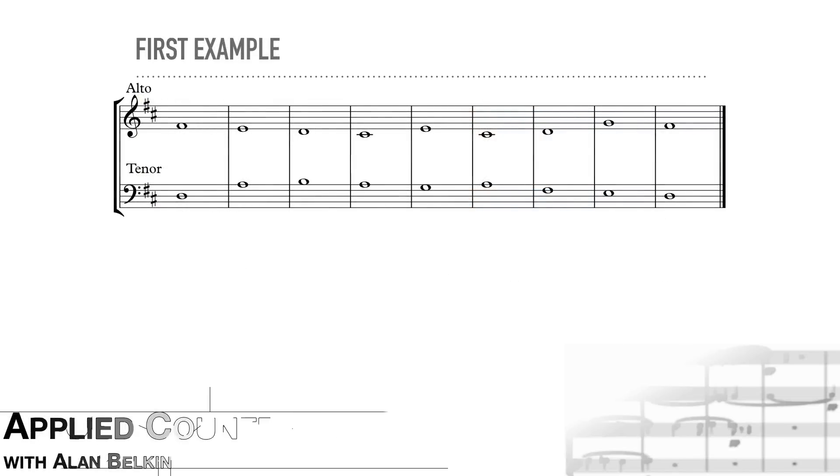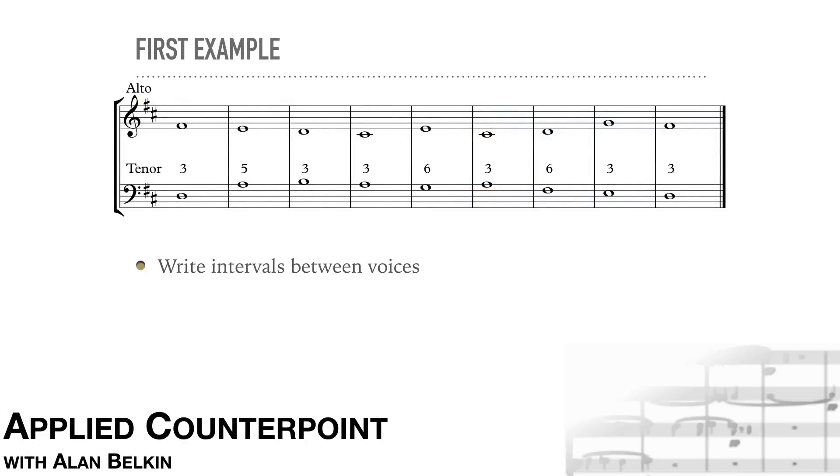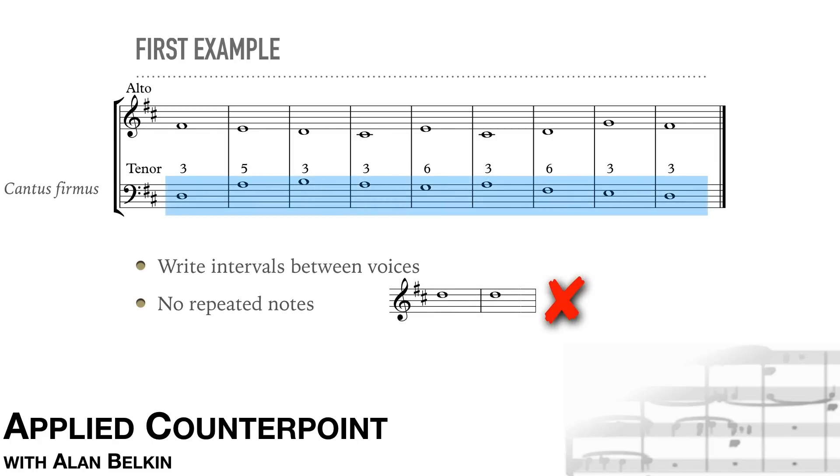Here's an example of First Species counterpoint. I've listed the intervals between the voices. I've named the intervals all as if they were within one octave. Incidentally, First Species does not allow for repeated notes. The cantus here is in the lower voice. You'll notice that we have only thirds, sixths, and fifths between the parts.